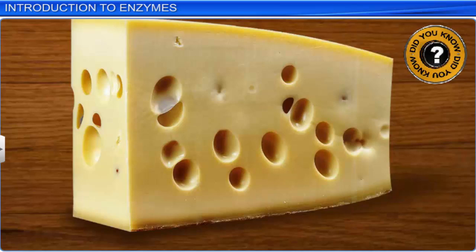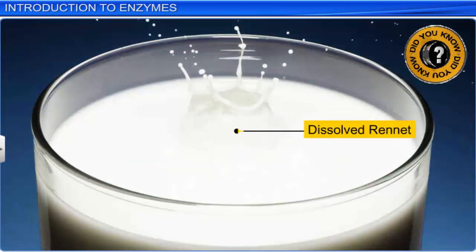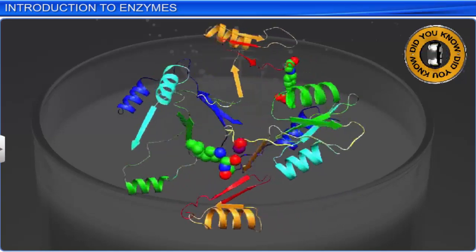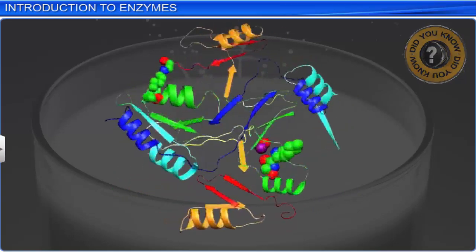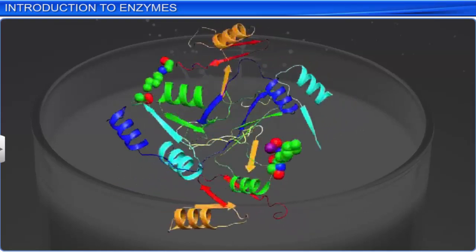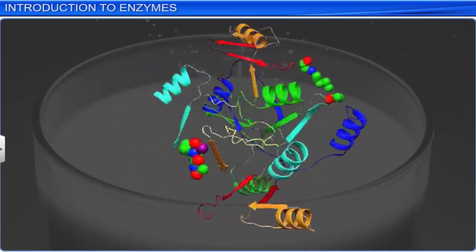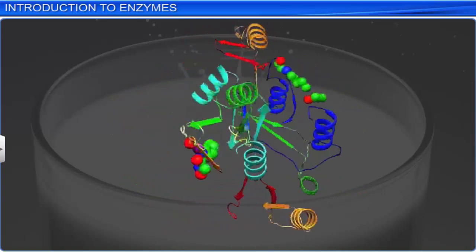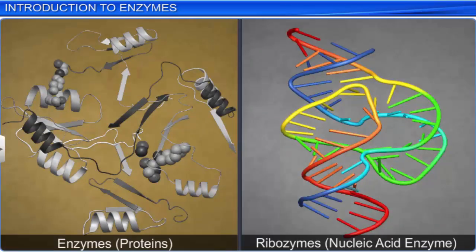Did you know that cheese is produced with the help of rennet, which is a natural complex of many enzymes? Enzymes act as biological catalysts in a living system, and change the rate of reactions without themselves getting altered. While most enzymes are proteins, some nucleic acids also behave like enzymes. These nucleic acids are called ribozymes.